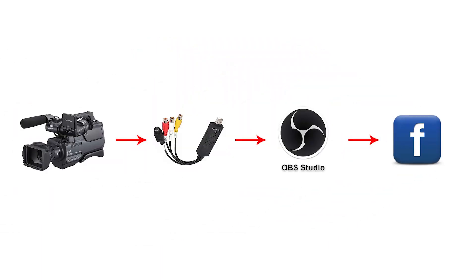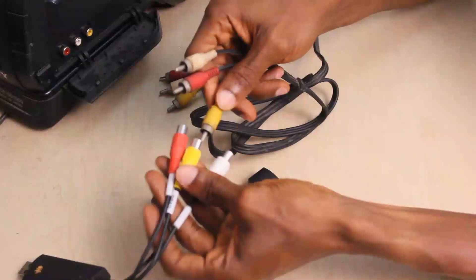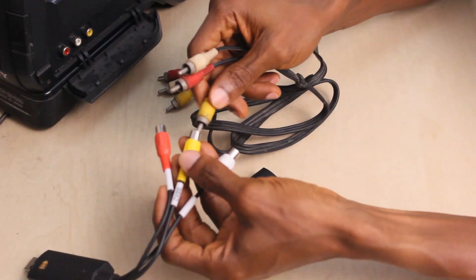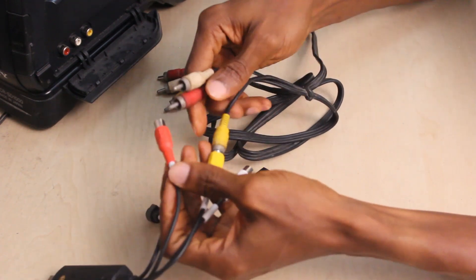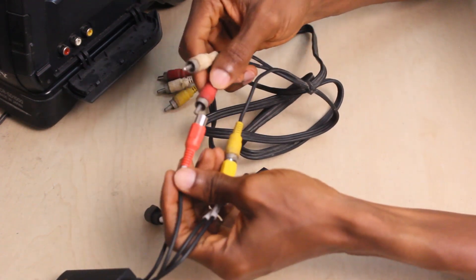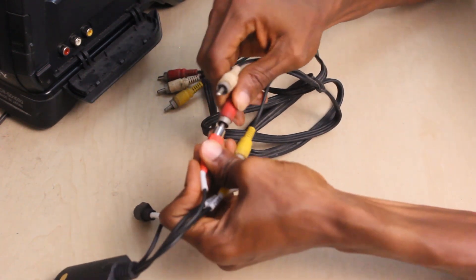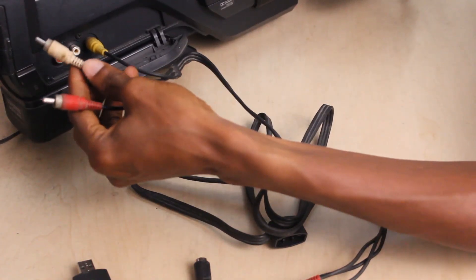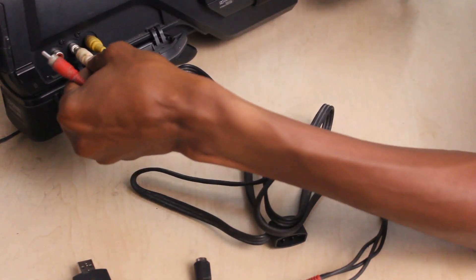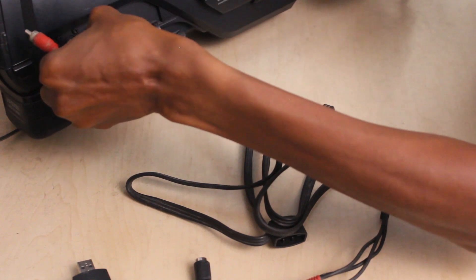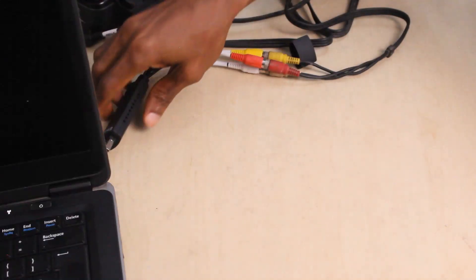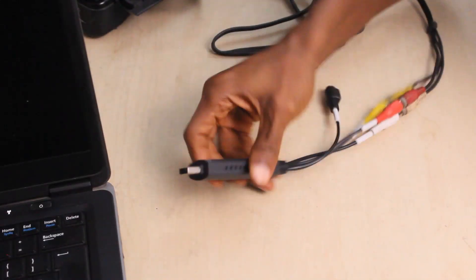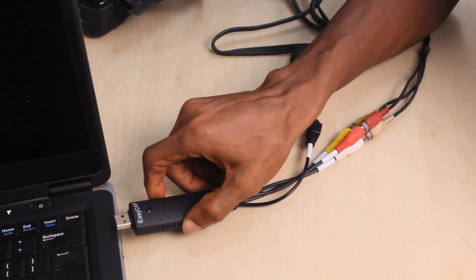The setup goes this way: you connect the camera to the Easy Capture adapter with the RCA cable, and then plug the adapter into your computer's USB port. If you're using Windows 10, the adapter will self-install — you don't need to do any additional installation.